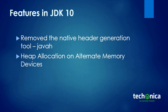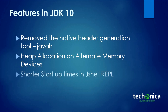Next is heap allocation on alternate memory devices — an interesting feature that shows Java is aiming for the future. There is a non-volatile dual inline memory module (NVDIMM), which is non-volatile memory and very cheap. Future systems will be equipped with heterogeneous memory architectures having many types of memory devices: DRAM, NVDIMM, and others. Java 10 enables the Java HotSpot VM to allocate objects on alternate memory devices specified by the user.